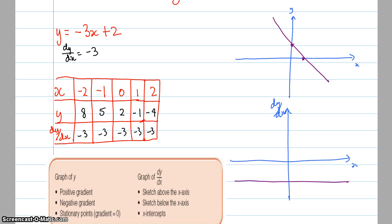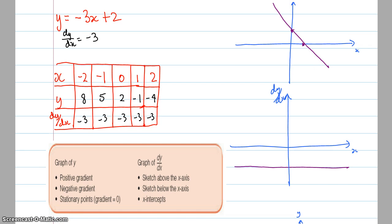Now just some general things that you can know when we're drawing the gradients and we'll have a look at this a little bit more. If the graph of y or if your original function has a positive gradient, then the graph of the derivative is above the x-axis. If your original graph has a negative gradient, it's going down, then we sketch below the x-axis.